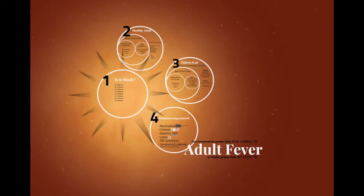If we approach fever just as its own thing, there are four blocks to think about. One: shock. Two: the young or physiologically robust patient. Three: the elderly and frail patient. And four: the patient with immune compromise.